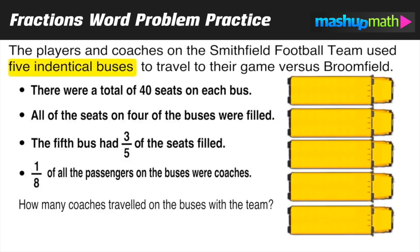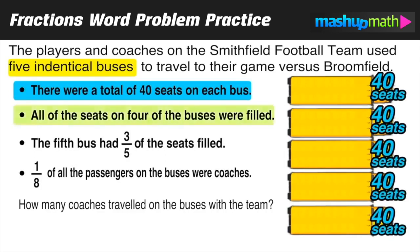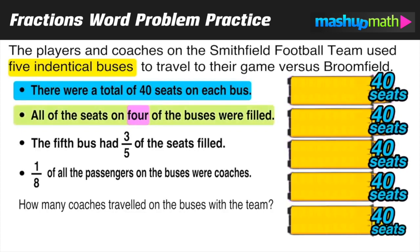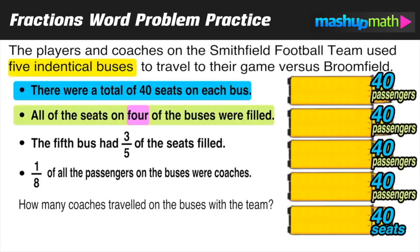Our first bullet point says there were 40 seats on each bus. We also know that all of the seats on four of the buses were filled — so four of the buses are totally packed with no room for anybody. Those four buses not only have 40 seats, but 40 passengers each as well.